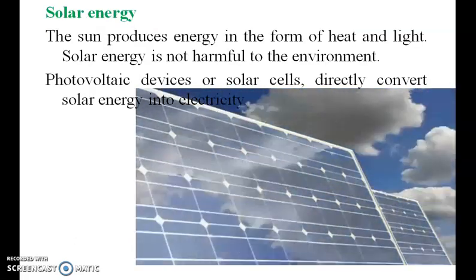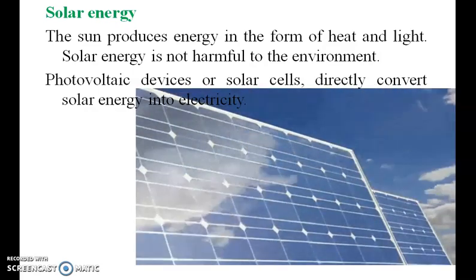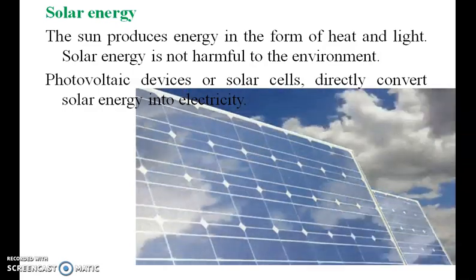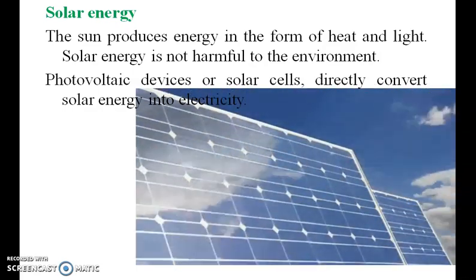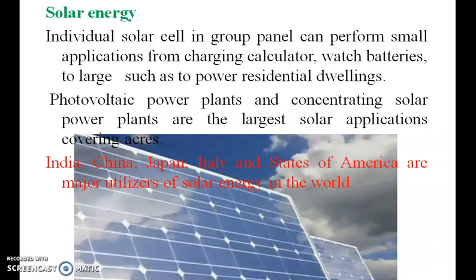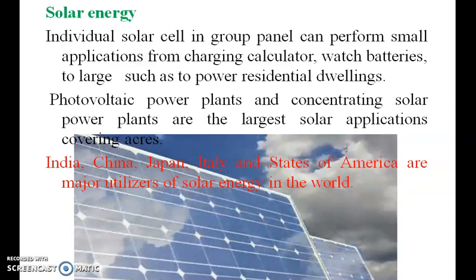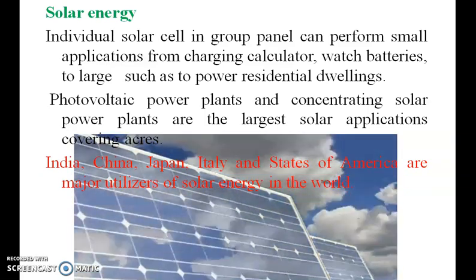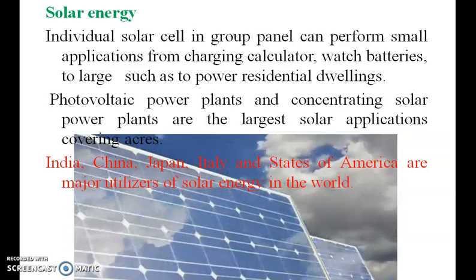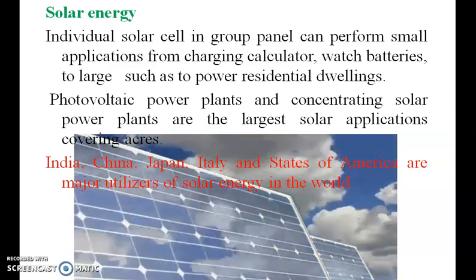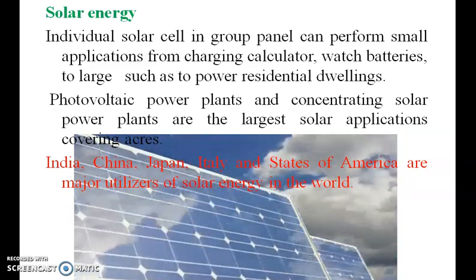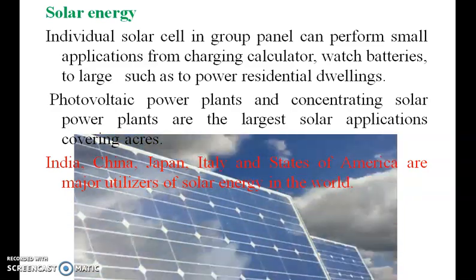Solar energy: the sun produces energy in the form of heat and light. Solar energy is not harmful to the environment. Photovoltaic devices or solar cells directly convert solar energy into electricity. Individual solar cells in a group panel can perform small applications from charging calculator batteries and watch batteries, to large applications such as powering residential buildings. India, China, Japan, Italy and the United States of America are major users of solar energy in the world.